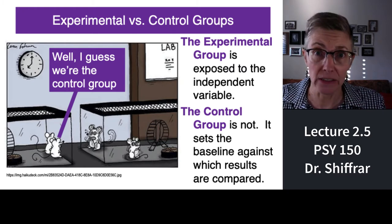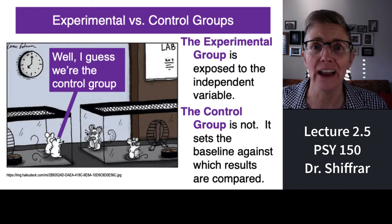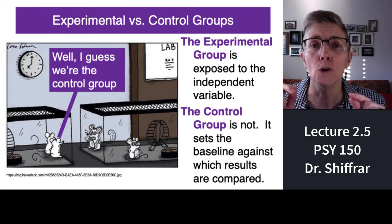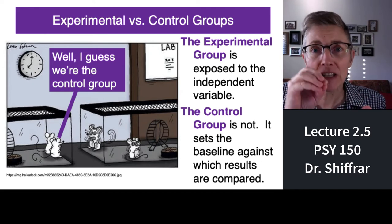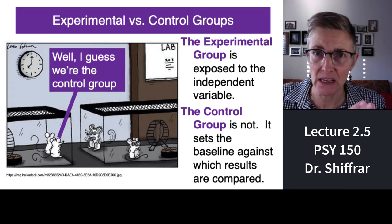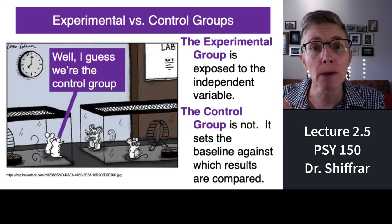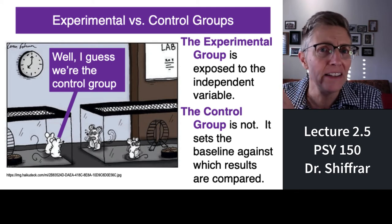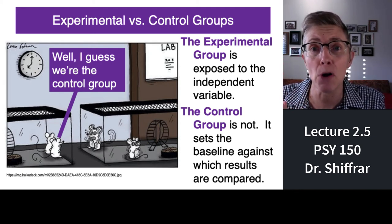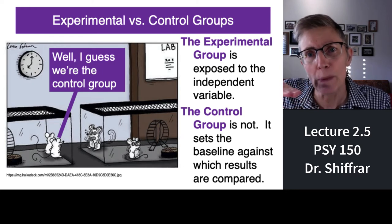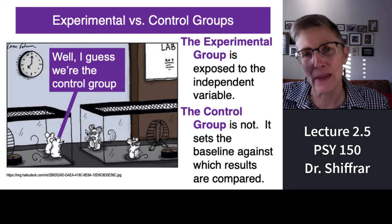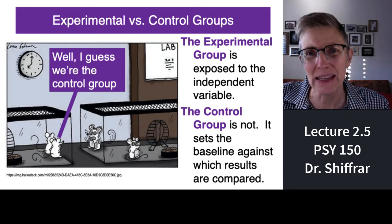The control group is the people who did not get the independent variable. To keep going with the COVID vaccine example: people who actually get the COVID vaccine being tested are in the experimental group. Some people will get a different vaccine or a sham vaccine — something called a placebo — and that's the control group. That gives you a baseline because everything is the same except what's being given.